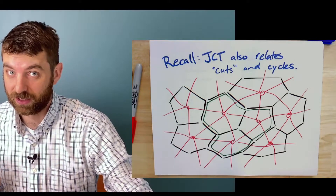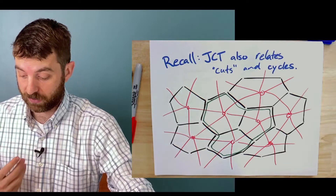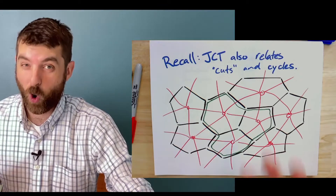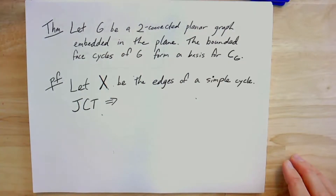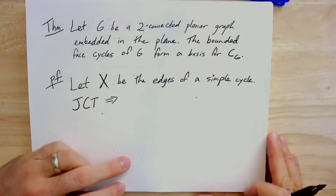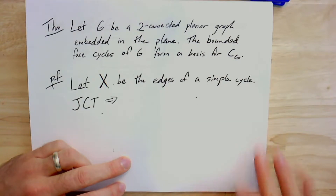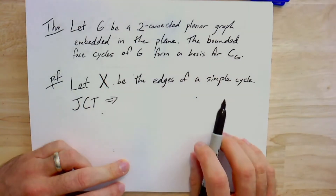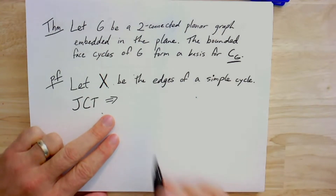This is the key idea that gives us the relationship between cycles and cuts in the dual. In fact, this is fundamental to planar graphs — you're not going to have this kind of relationship for graphs that are not planar, because it really relies on the Jordan curve theorem, and you only get it when you have the Jordan curve theorem. So let G be a two-connected planar graph. In two-connected planar graphs, every face is a cycle.